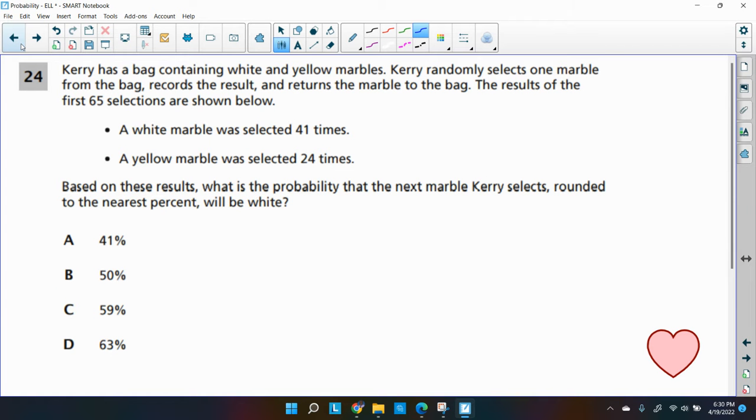But Kerry has a bag containing white and yellow marbles. So we got white and yellow marbles. Okay, that's good to know. So underline that. Kerry randomly selects one marble. So she's going to select one marble. And that's it. Random means no peeking. From the bag, she's going to record the result and then return the marble back to the bag.